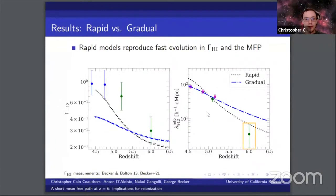Our main conclusion here is that the rapid model does a better job of reproducing the quick evolution in the photoionization rate, which I've shown on the left, and the mean free path, which I've shown on the right here.